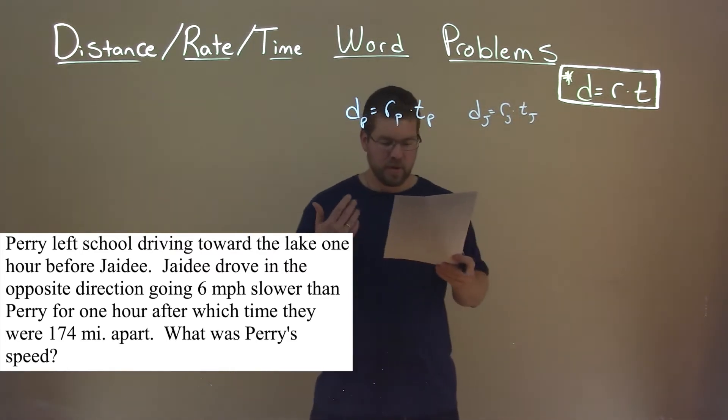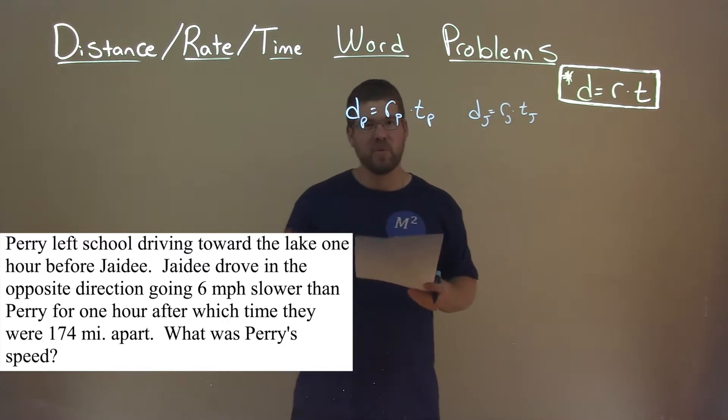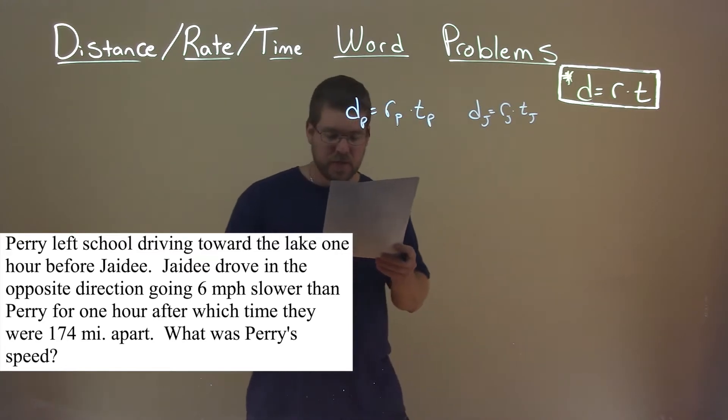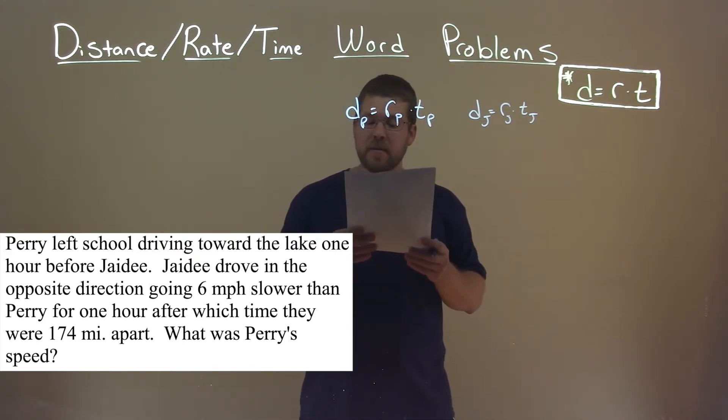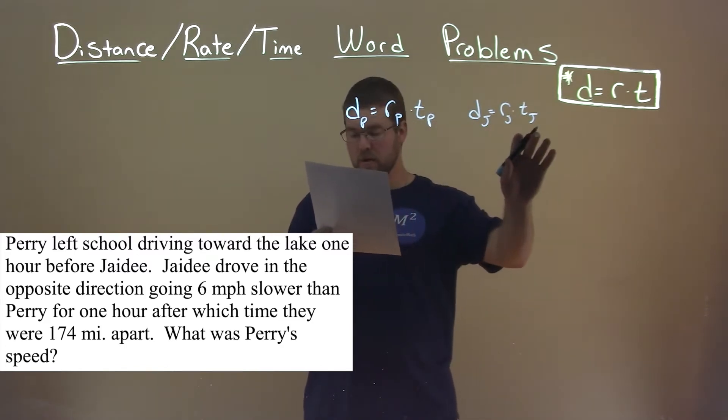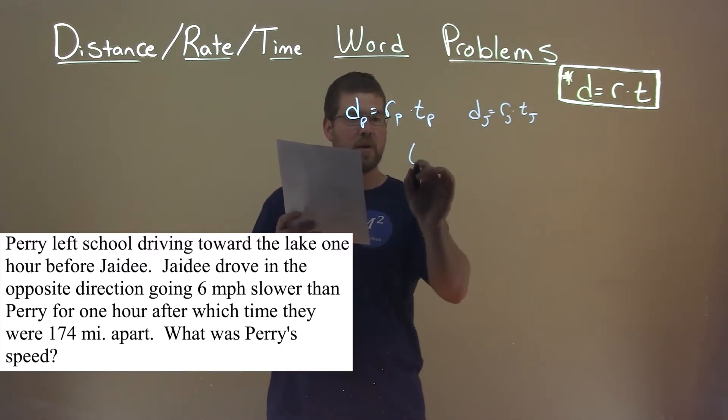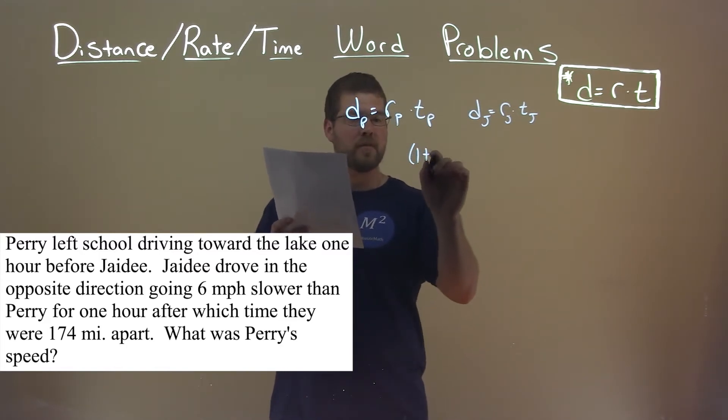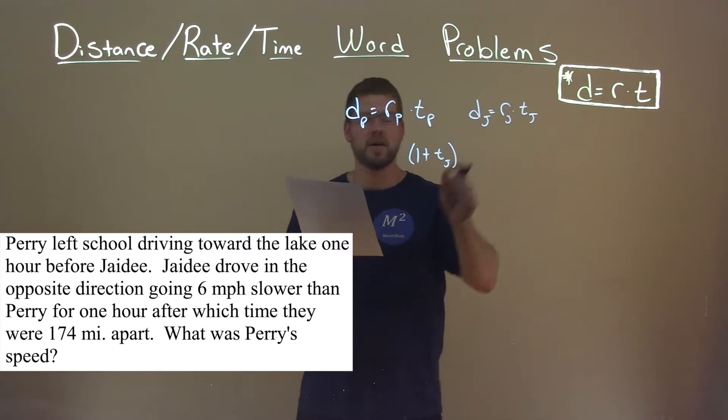So now we're going to put in what we know and what we need to find. They tell us here that Perry left an hour before JD. And then at the end time happens, there's an hour before and then whatever time JD goes. That means Perry's time we can write in terms of JD. It is one hour plus JD's time, T of JD. And that's the total time that Perry was there, one plus the hour of JD.